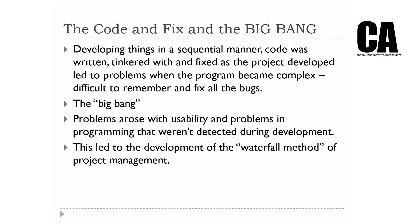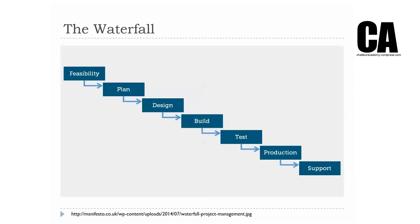The problems with this whole big bang system led to the waterfall method of project management. The waterfall method looked like this: you started off with the feasibility of a project, you did some planning, you designed, you built, you tested, you set it into production, and then you provided support to the users. Which just seems like a reasonable way of doing things — you start at the beginning, work through the project, test at the end, put it live and support it.